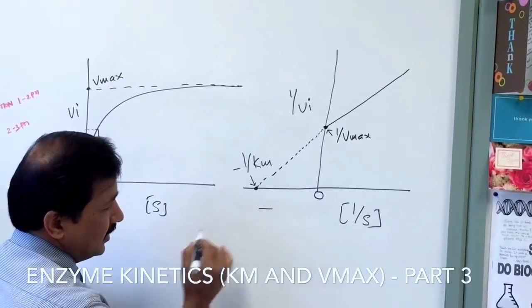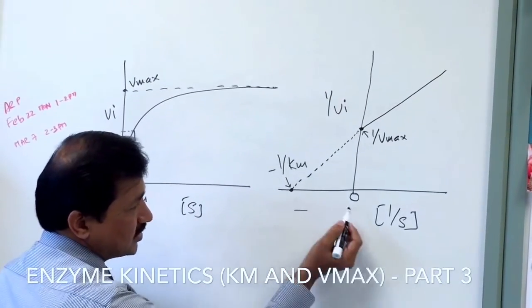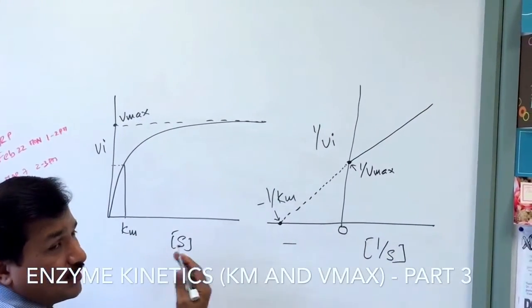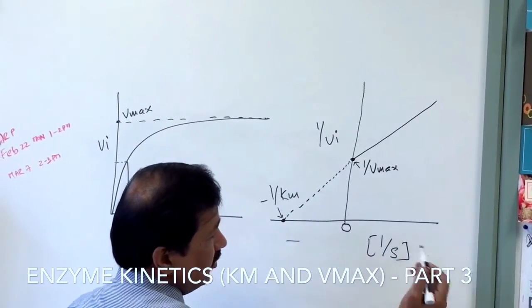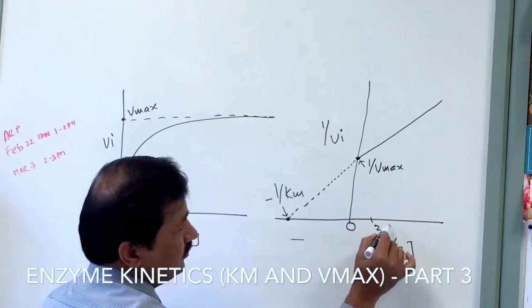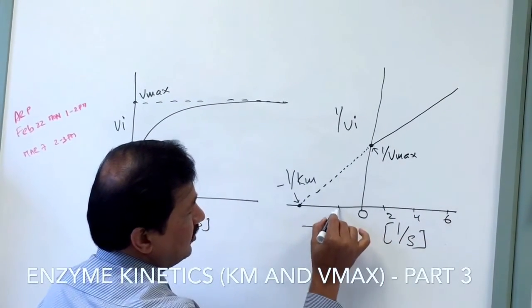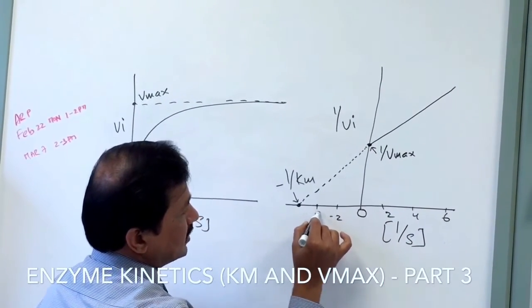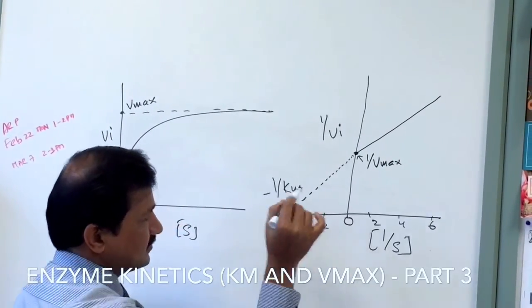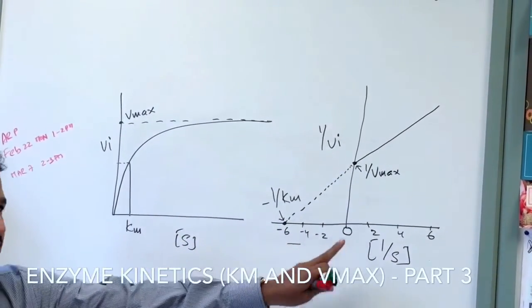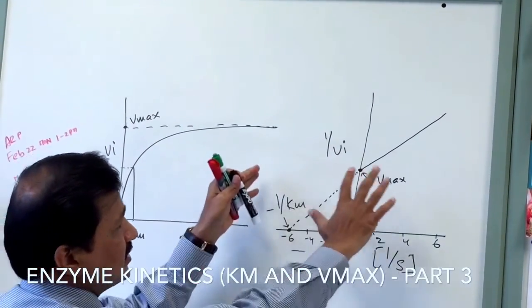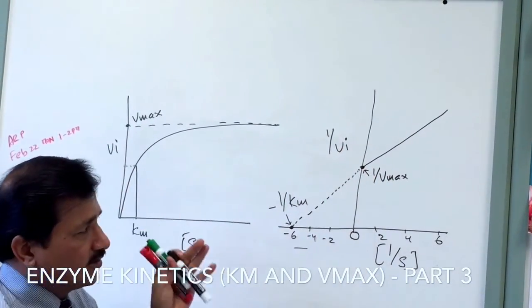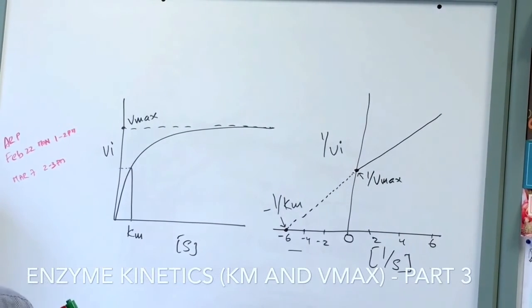All these numbers are written with a minus sign just to indicate that they are on the left side of zero, the other side of zero. This side will be written as whole numbers: 2, 4, 6. This will be minus 2, minus 4, and minus 6. The minus sign indicates they are on the other side of zero. These are the things you need to expect in a Lineweaver-Burk plot.